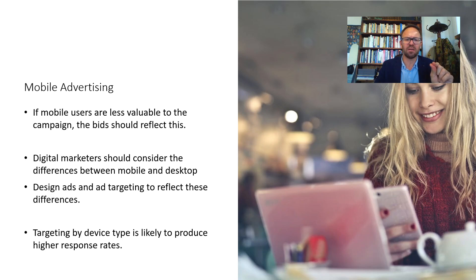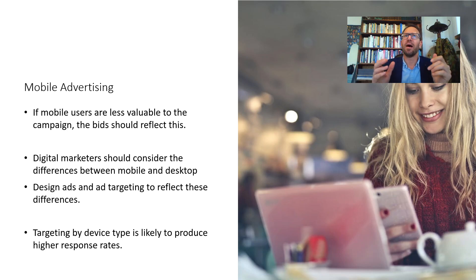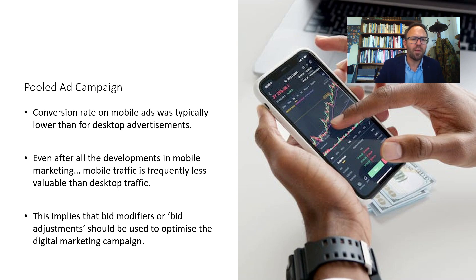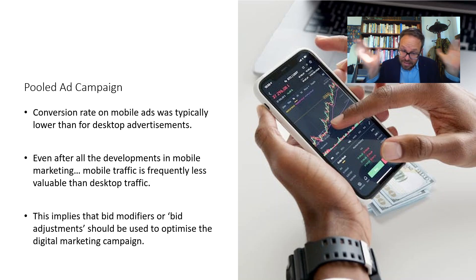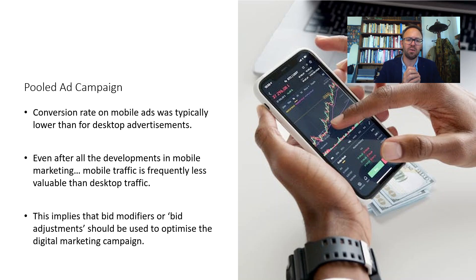Targeting by device type tends to produce higher response rates, but it requires more analysis and effort. A pooled ad campaign targets both desktops and mobile with the same ads. The conversion rate on mobile ads has typically been lower than desktop, and even after developments in mobile marketing, mobile traffic is frequently less valuable — meaning people tend to buy more on desktop than mobile. This implies that bid modifiers or bid adjustments should be used to optimize the campaign.